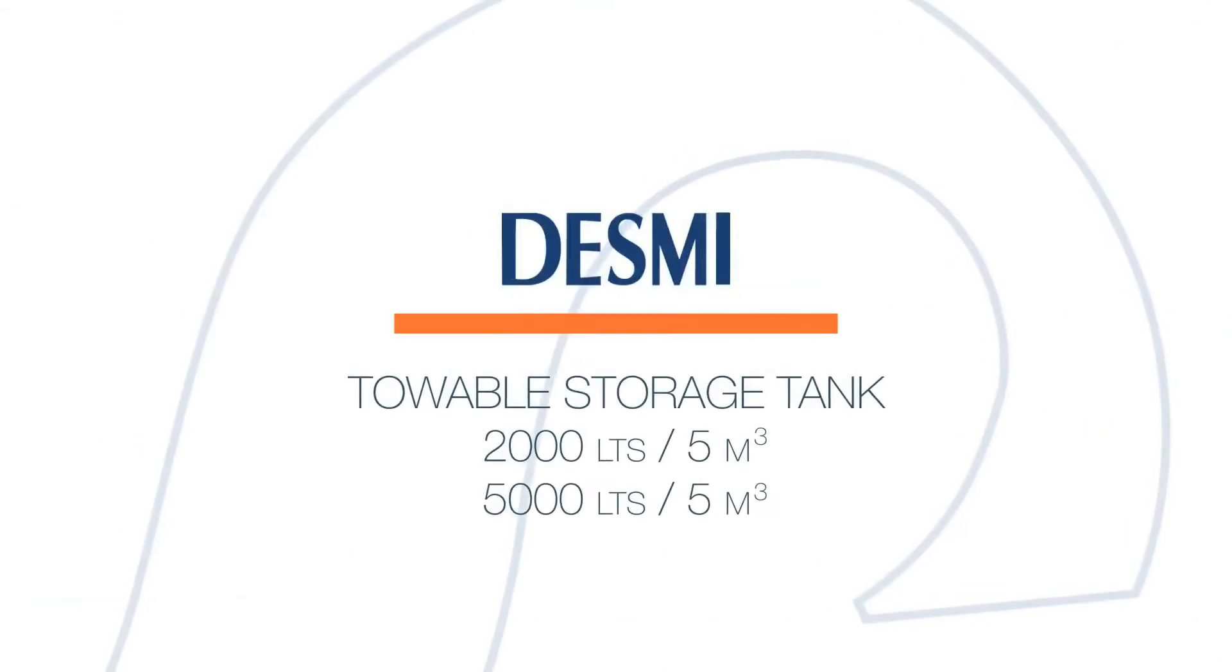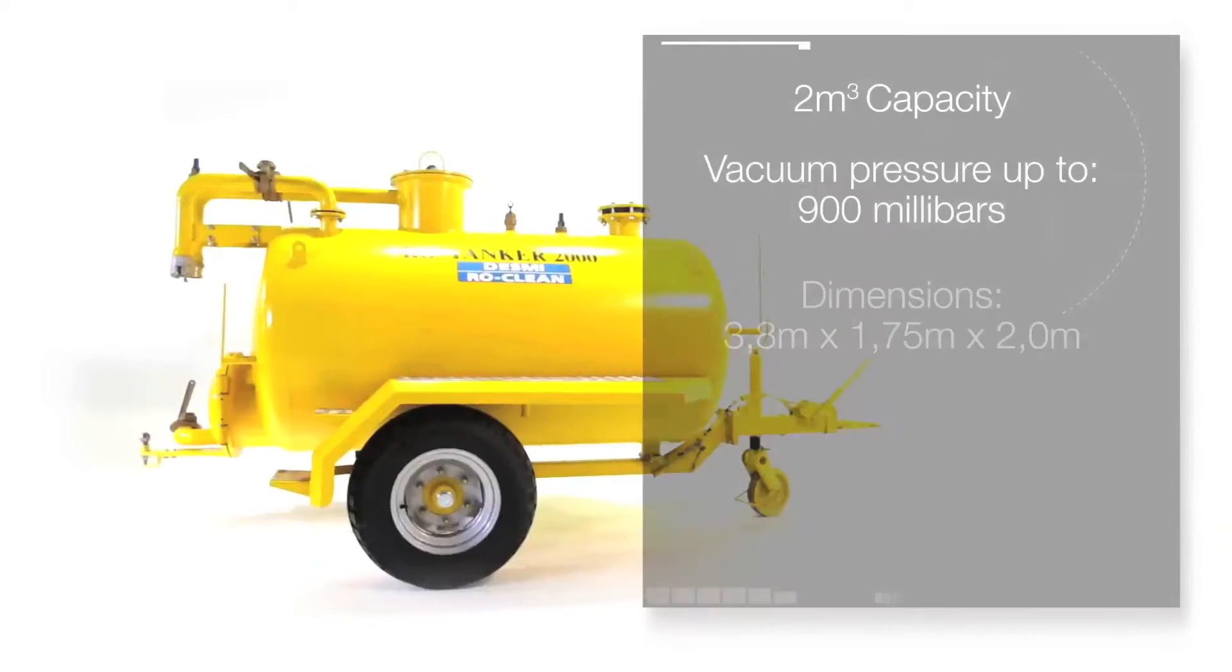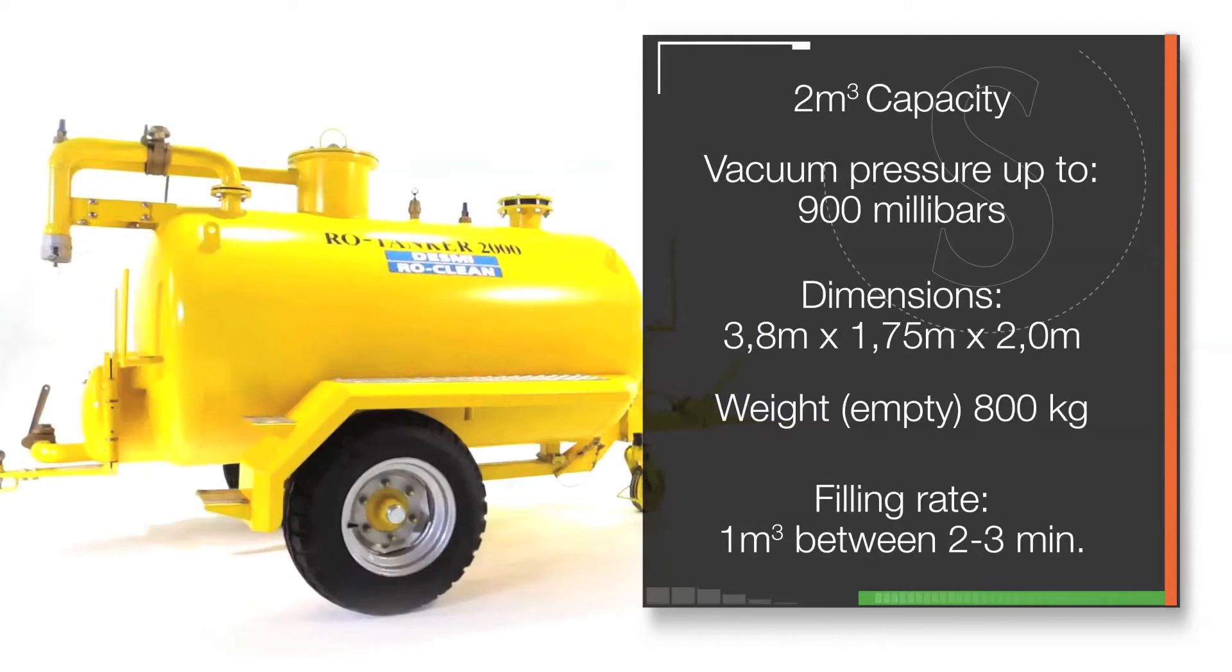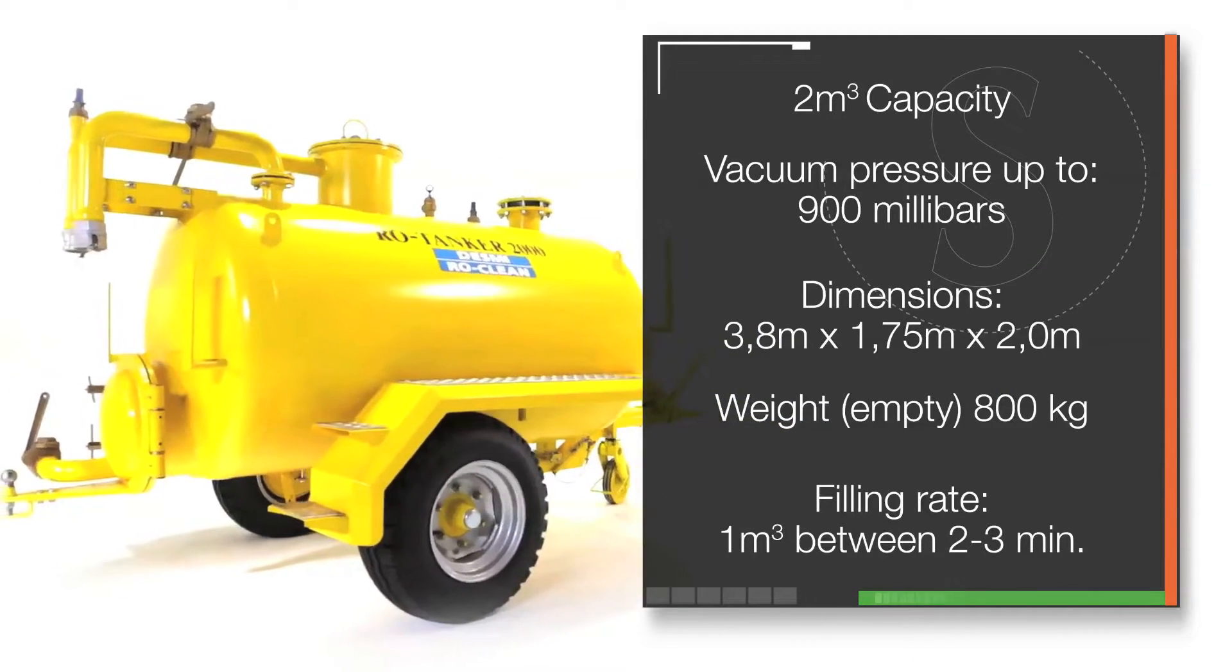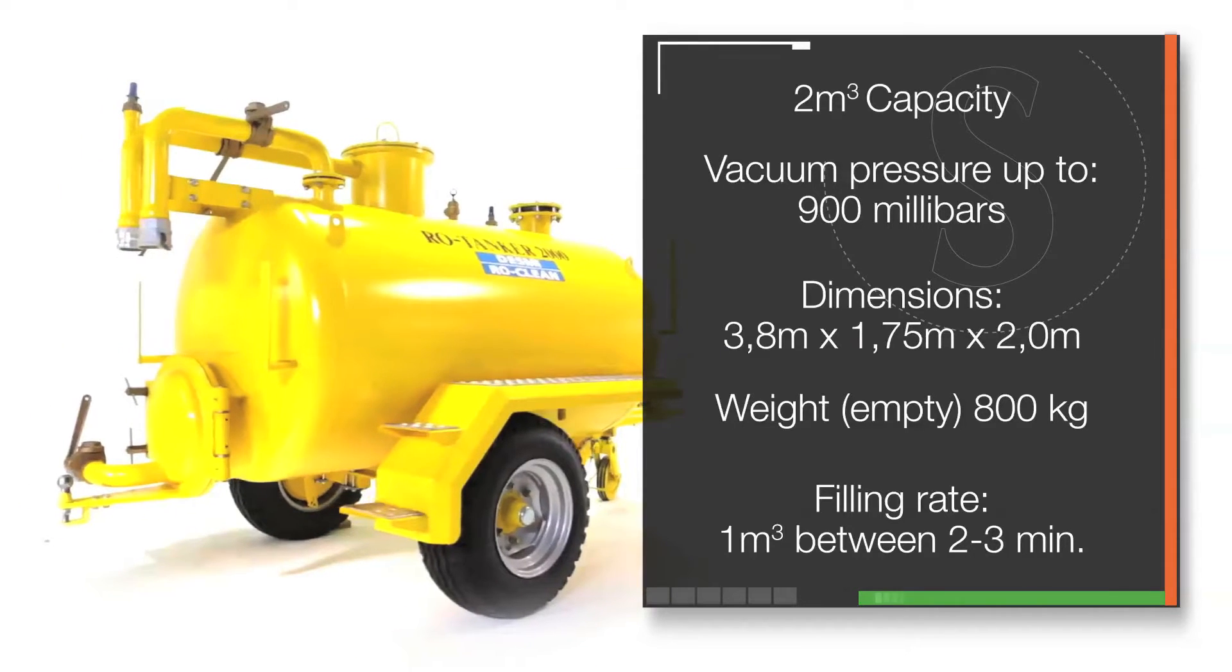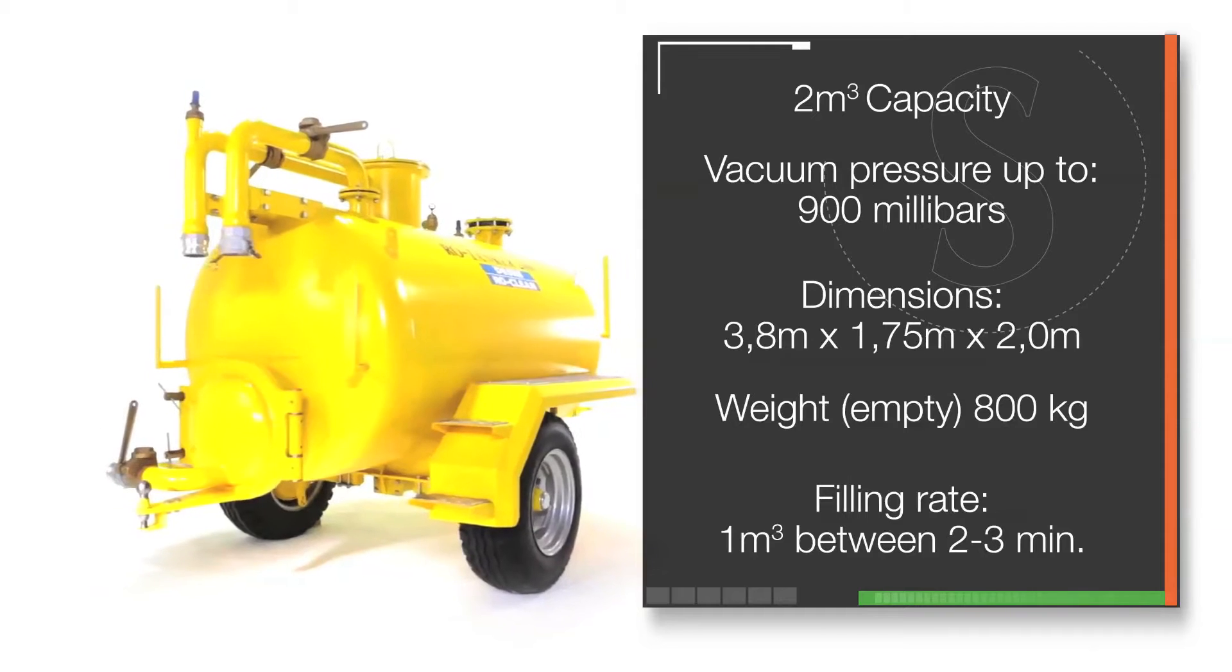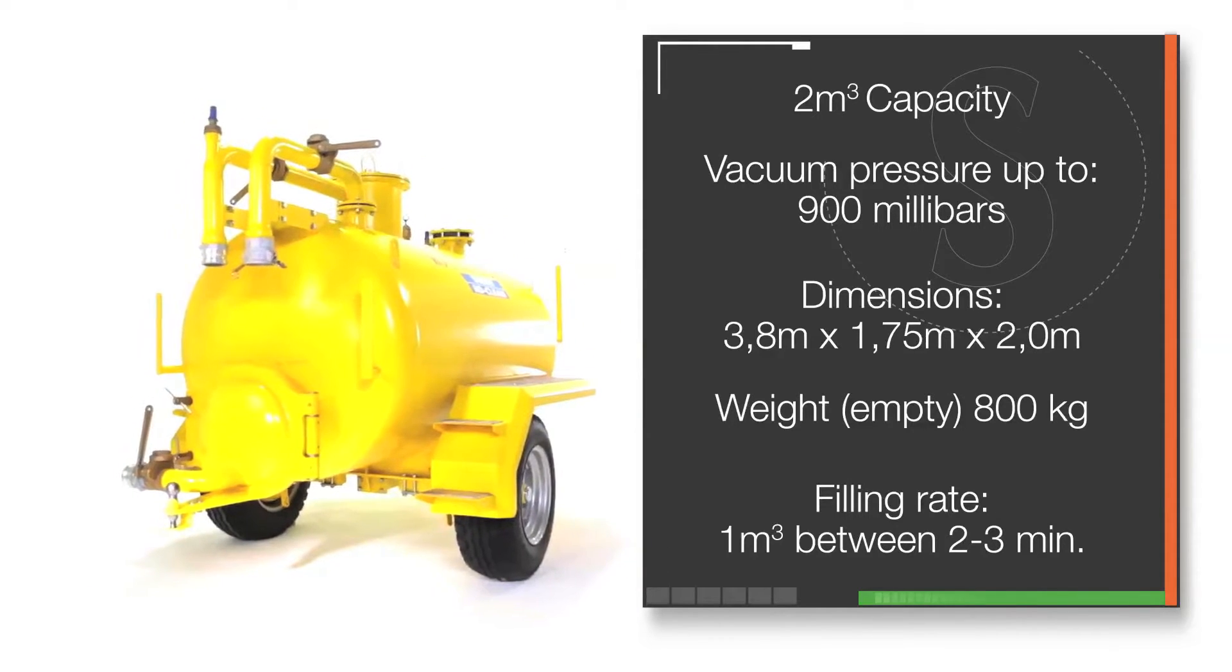The Ro tanker 2000 has a capacity of 2 cubic meters and has been designed for a vacuum pressure up to 900 millibars. However, normal operations are between 250 to 400 millibars. The filling rate depends on the quantity and type of product available. Normally, 1 cubic meter for 2 to 3 minutes.